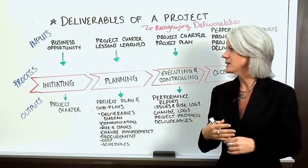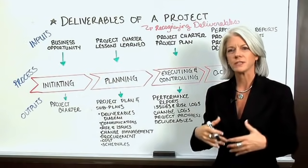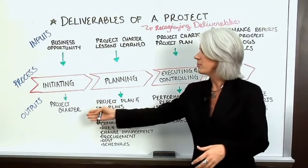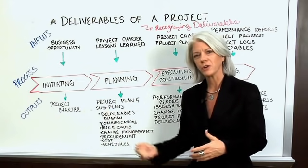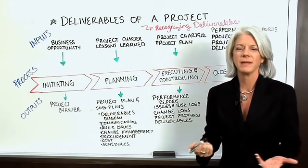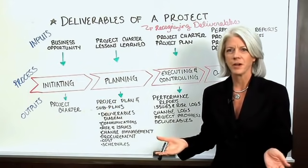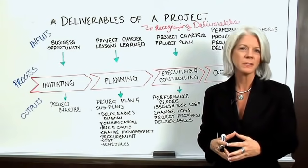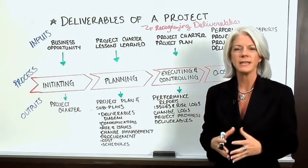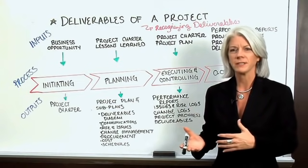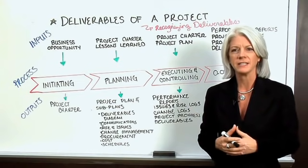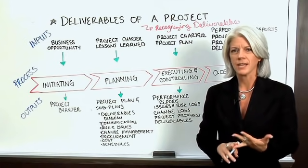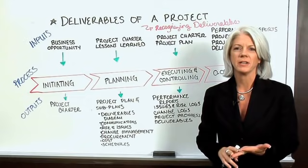Working with the stakeholders and critical team members, they process that information and the output becomes the project charter. Many people today may call it something different — a statement of work, an estimate response document, a proposal — but that's the main document coming out that identifies what's the scope, a high-level timeline, and what's the high-level budget of this project.